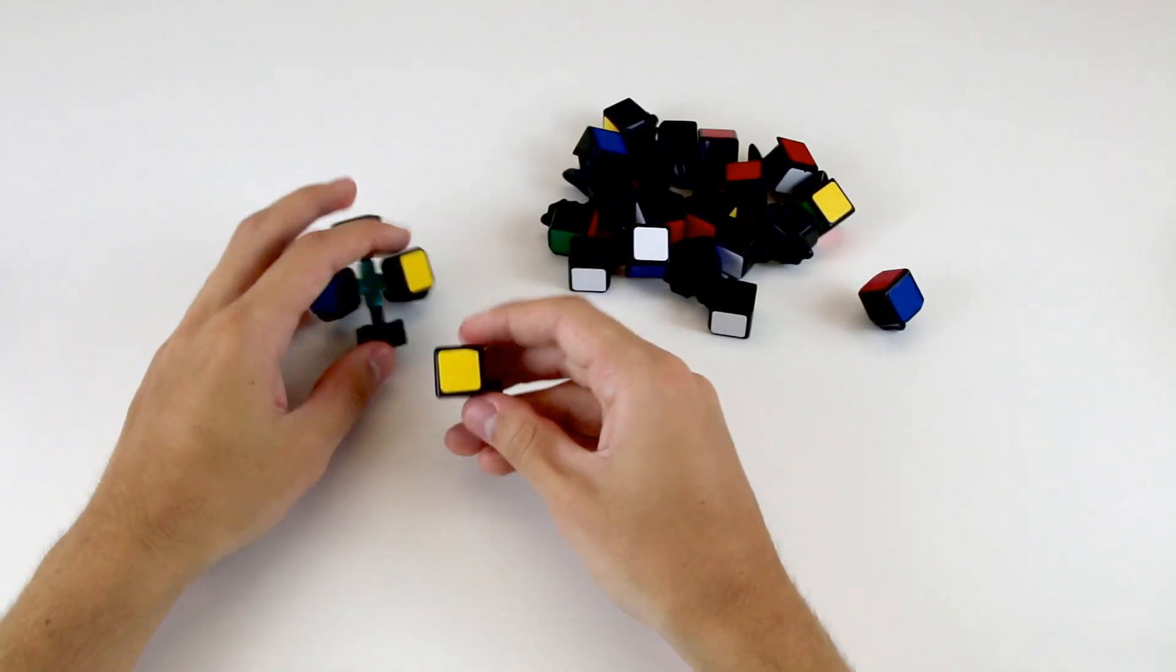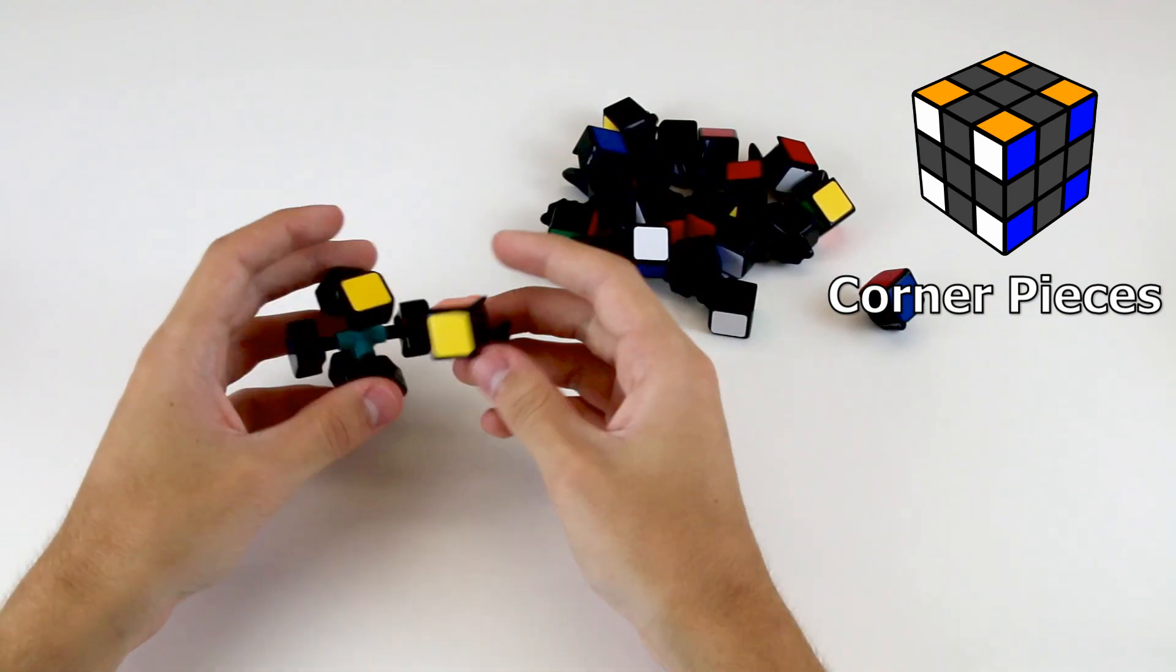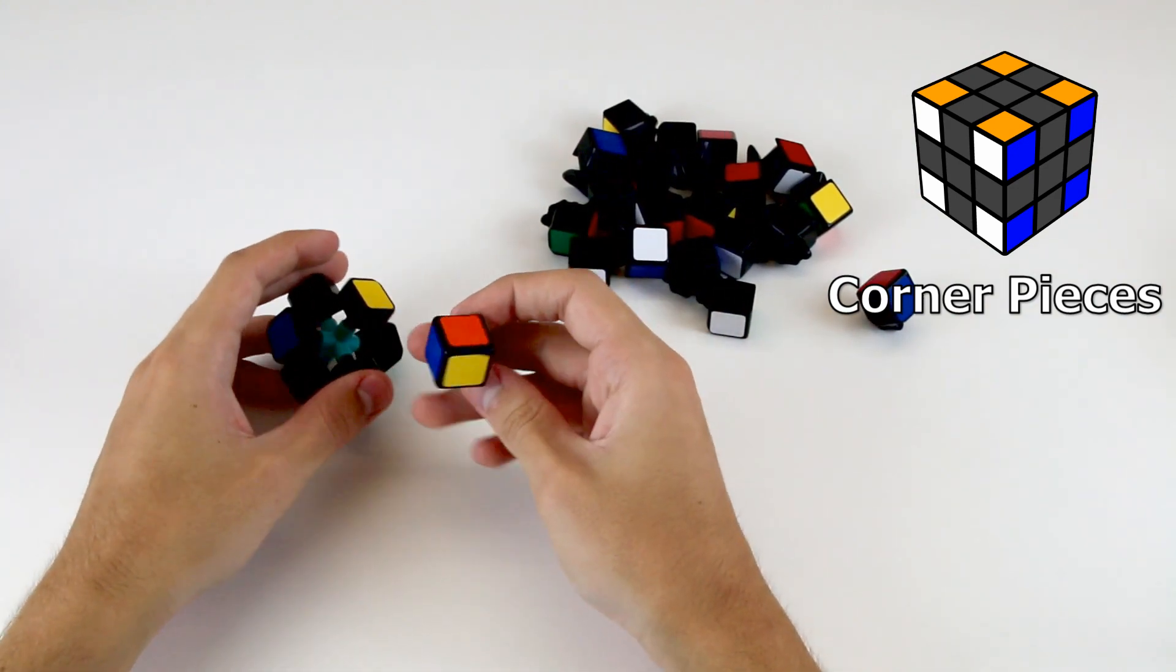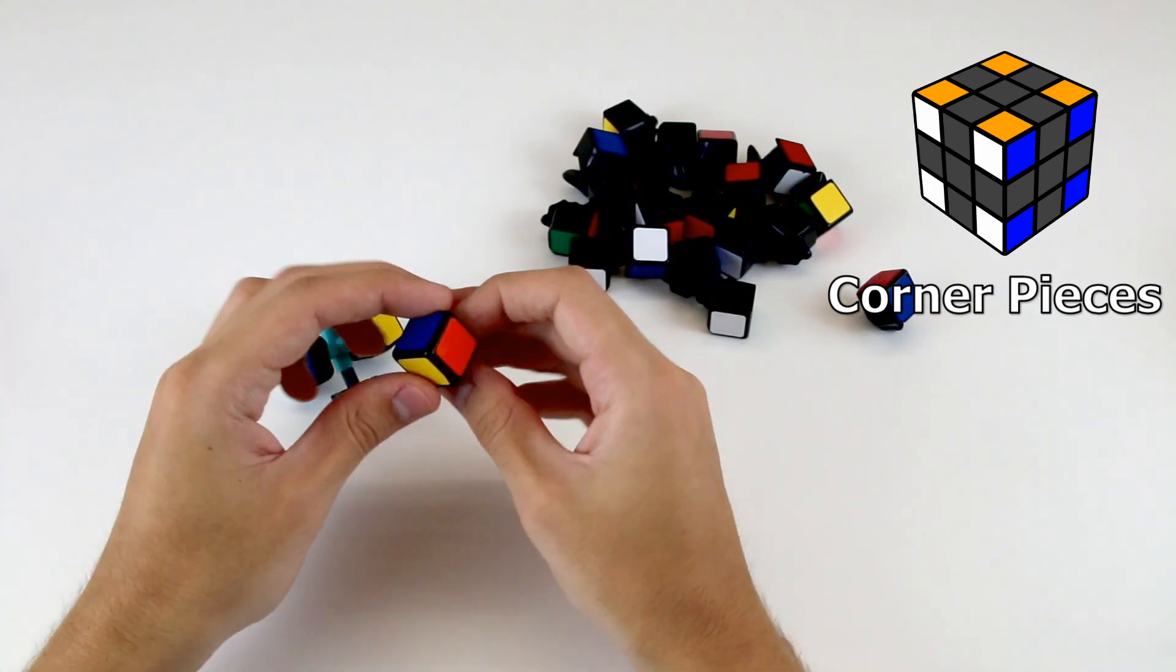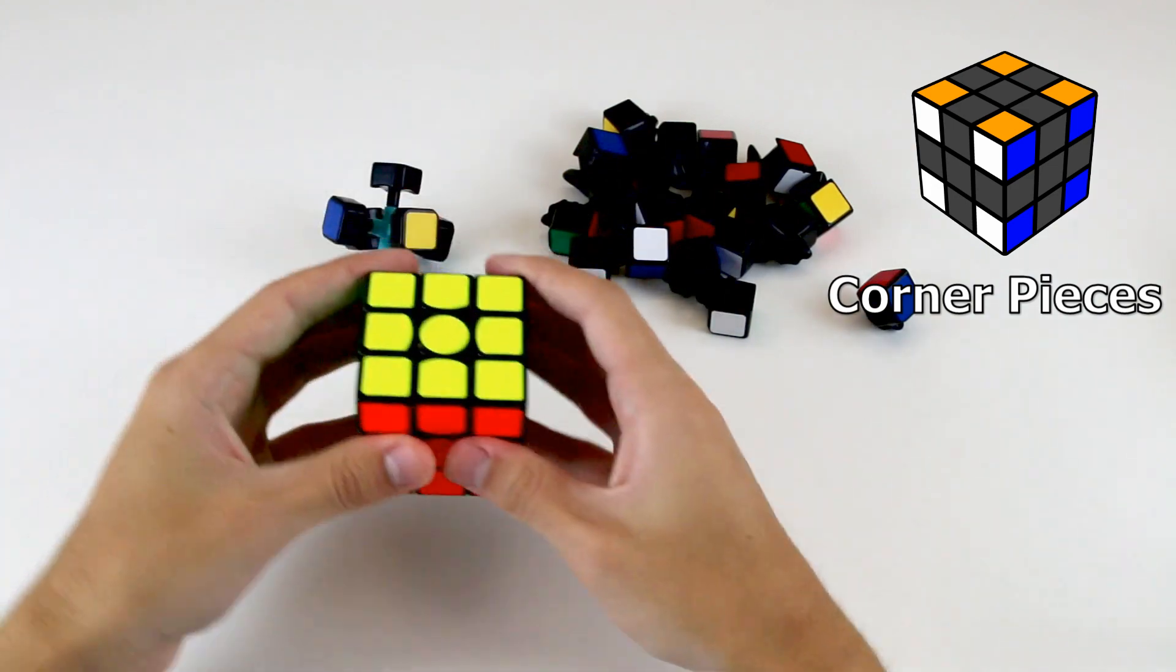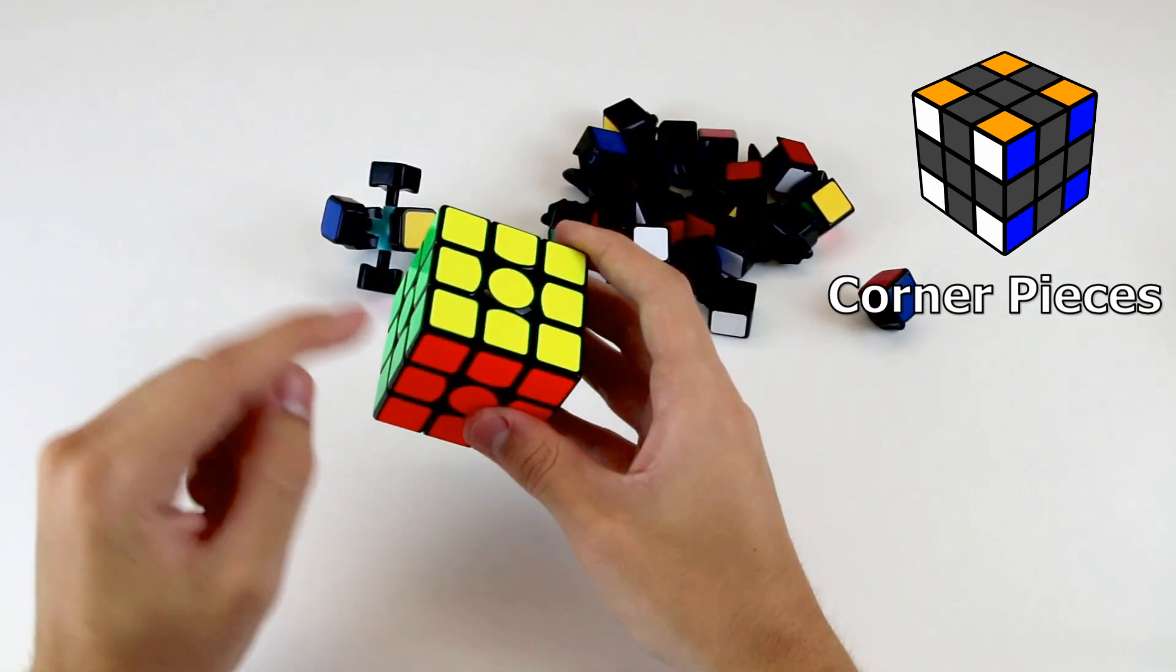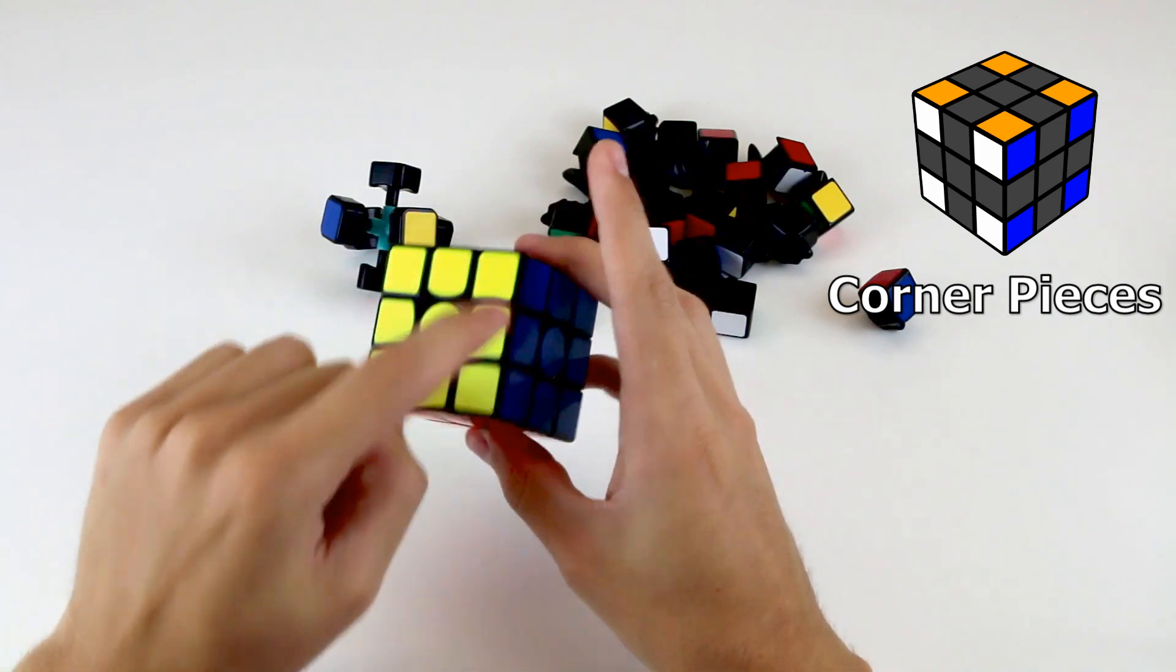The final type of piece on a Rubik's Cube is the corner piece. And these pieces, as their name suggests, lie at the eight corners of the Rubik's Cube. Now, a corner piece, unlike an edge piece, has three stickers on it. And on a solved Rubik's Cube, there are eight corner pieces, which are located, as their name suggests, at every single corner of the Rubik's Cube.